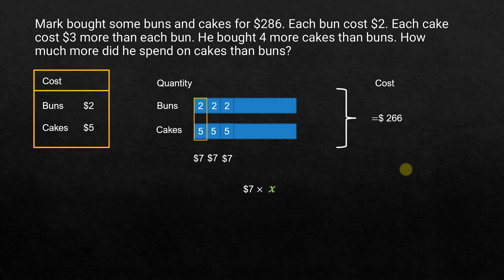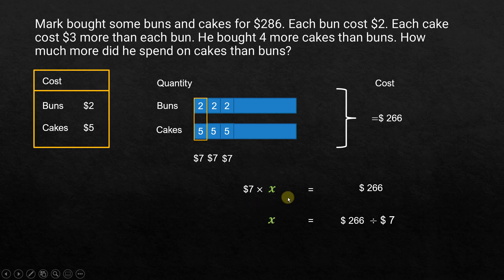Writing it as an equation: $7 times the unknown number of units equals $266. So X equals $266 divided by 7, which is 38. Remember, when you divide a dollar amount by another dollar amount you get the quantity. So X is 38, meaning there are 38 buns and 38 cakes in the equal portion.